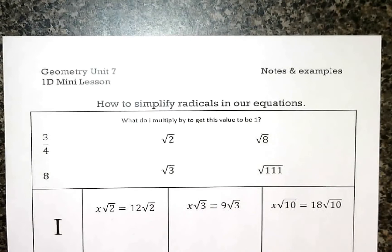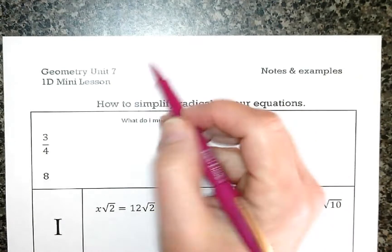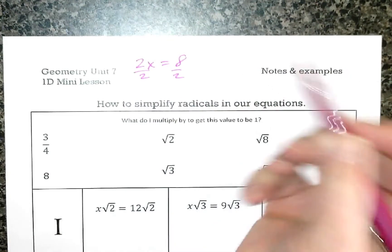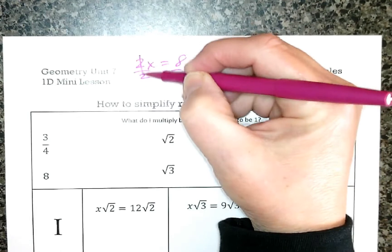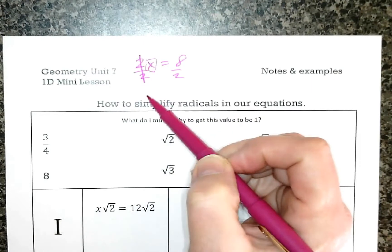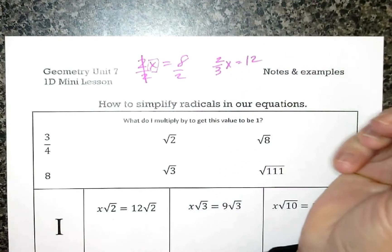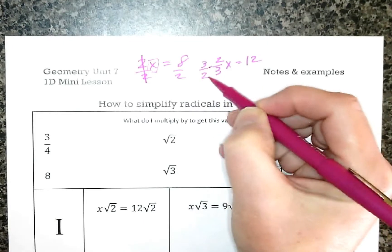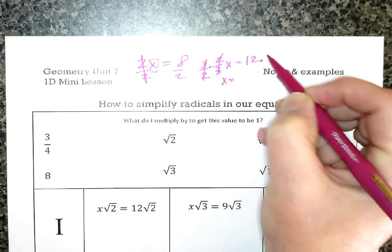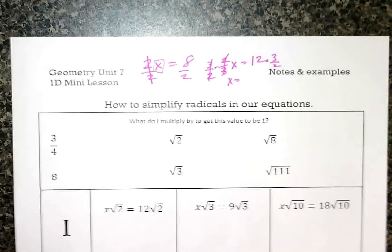One of the things we're going to be doing is solving some equations that have radicals or square roots in them. When solving an equation such as 2x equals 8, we divide both sides by 2 so that x has a coefficient of 1. Similarly, if I have two-thirds x equals some number, I multiply by the reciprocal, giving me 6 over 6, which is 1. Our goal is always to get that coefficient in front of x to be 1.